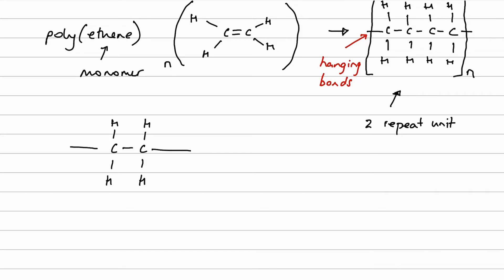Hanging bonds, which are nice and long, square brackets, and the N. It goes on and on and on. So that's polyethene.